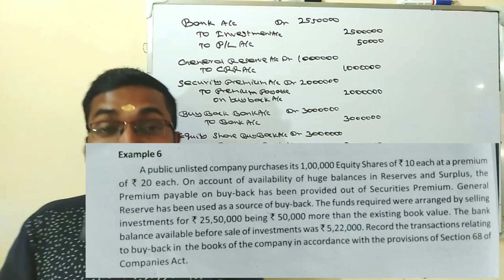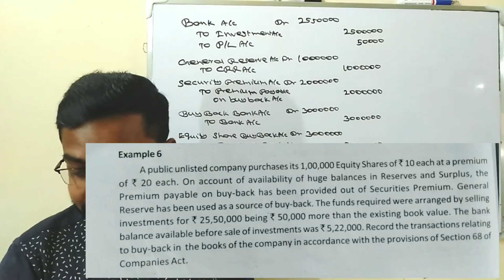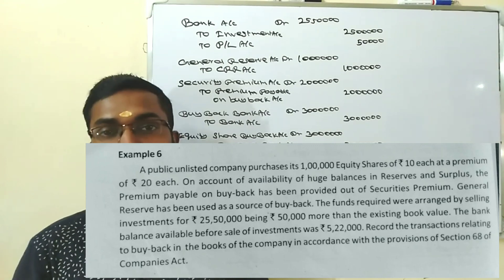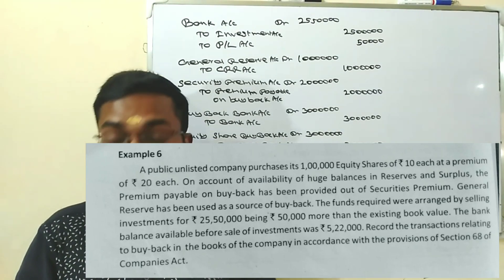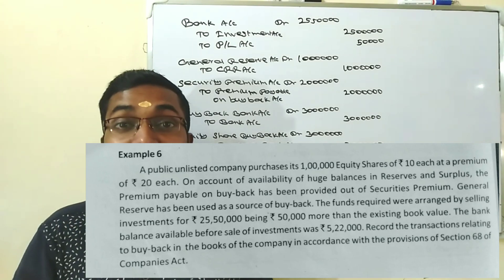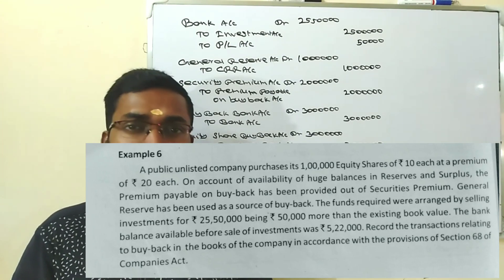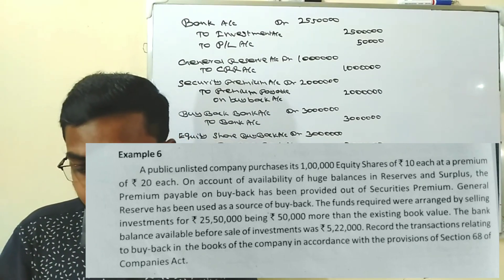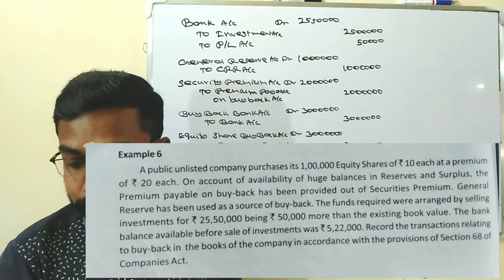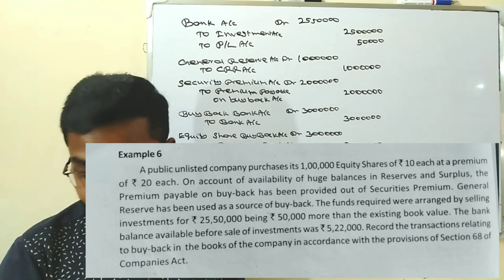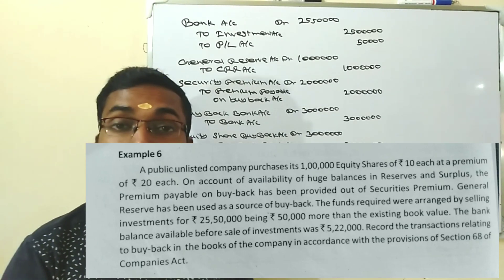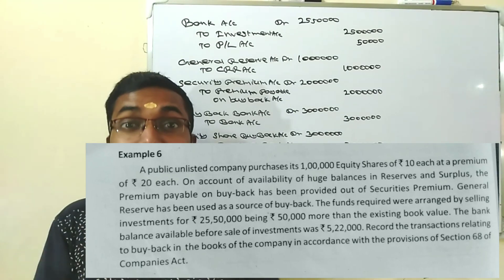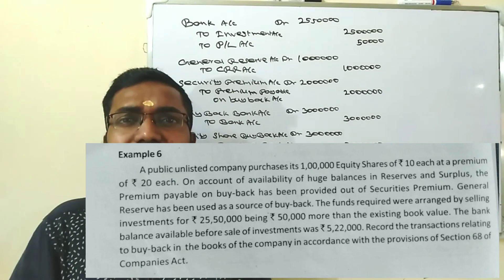A public unlisted company purchases its 1 lakh equity shares of Rs.10 each at a premium of Rs.20 each — that means total Rs.30. On account of availability of huge balances in reserves and surplus, the premium payable on buyback has been provided out of security premium. We have Rs.20 on premium.